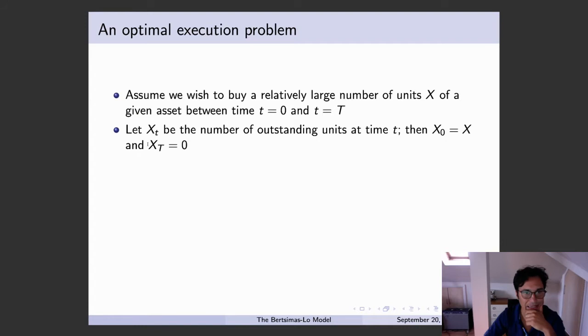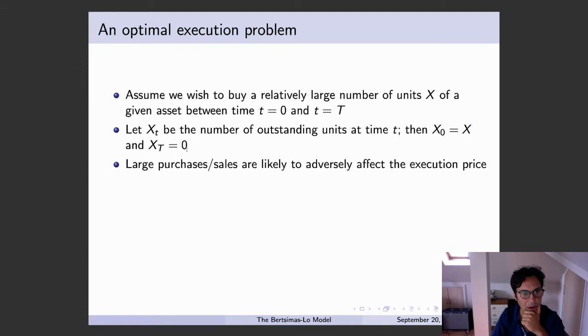In terms of notation, I'm going to call X_T the number of outstanding units at little time T and X_0 is going to be this quantity. Think of it like 100 units, whatever, it doesn't matter. And X capital T needs to be zero. So that's just to say that we have a constraint. We need to finish by capital T our execution.